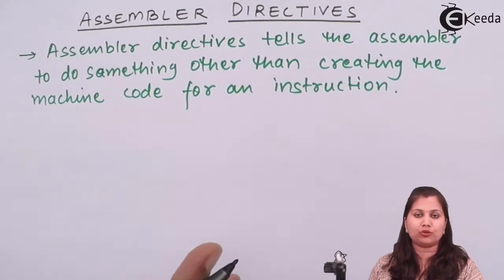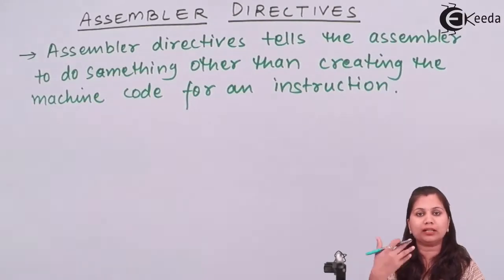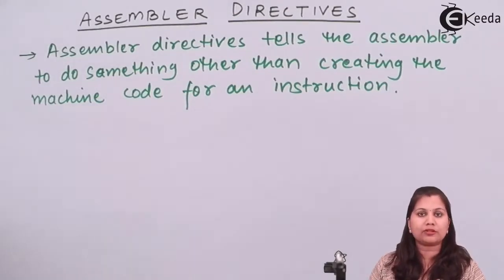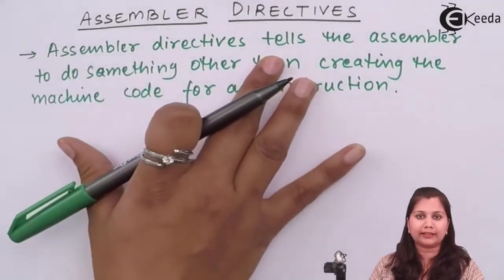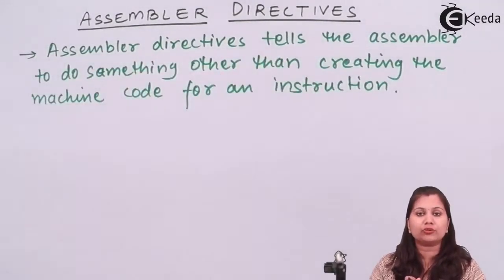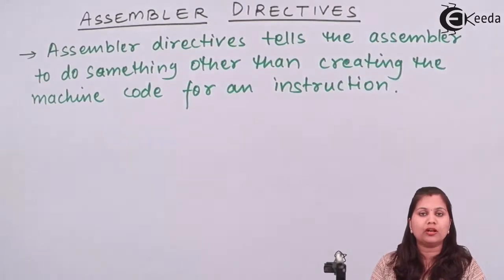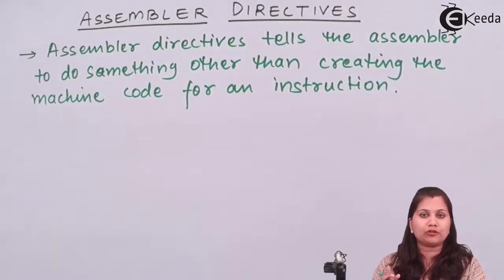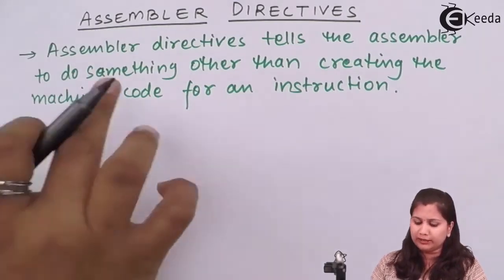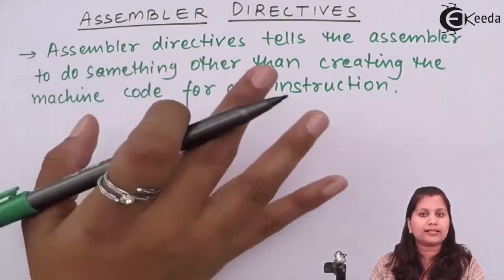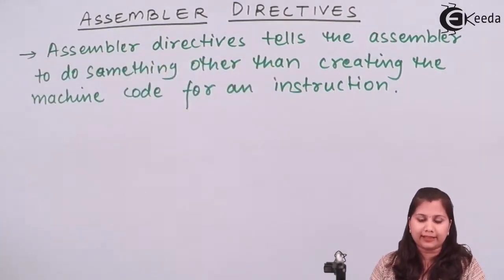Assembler directives tell the assembler that it does not have to convert the assembly language into machine language but has to perform some other operations. Those types of instructions which do not involve the conversion of assembly language into machine language are called assembler directives.